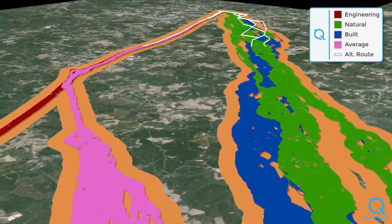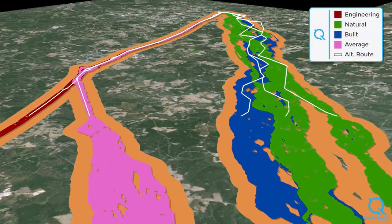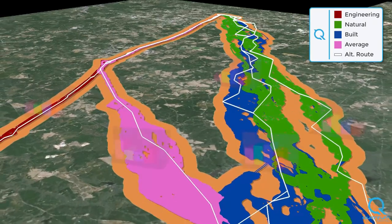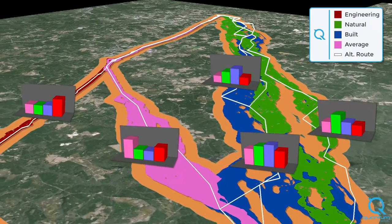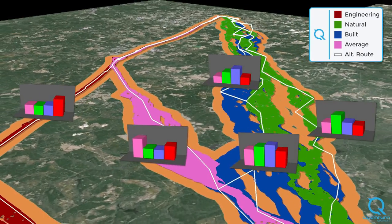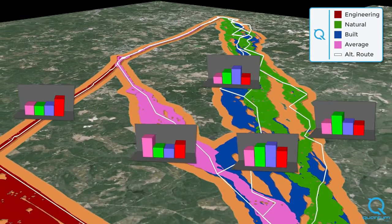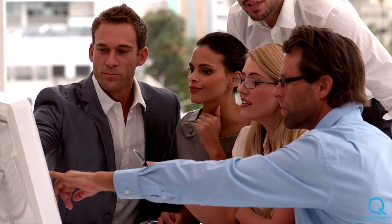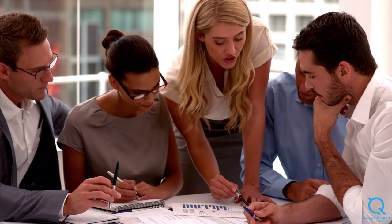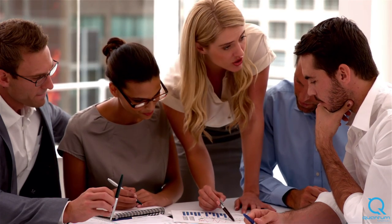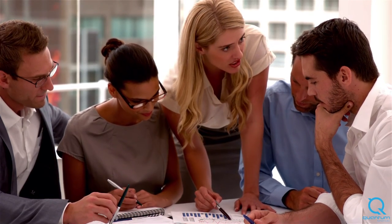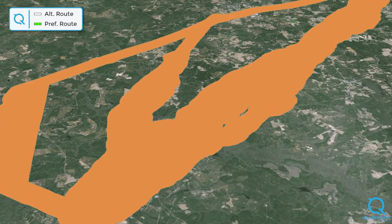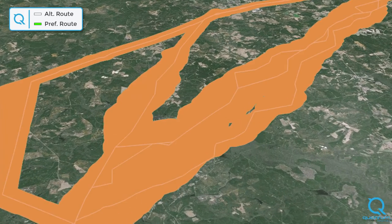After statistical analysis, Quantum Spatial presents the top-scoring routes to the transmission project team for expert judgment. This final stage of analysis allows experts to apply project-specific criteria to the alternate routes and determine the preferred route.